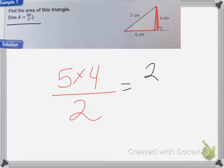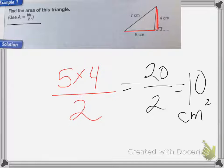So that'll be 20 divided by 2, which is equal to 10 centimeters squared, because area we always squared the label.